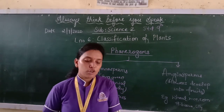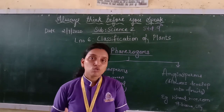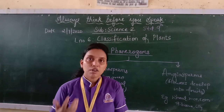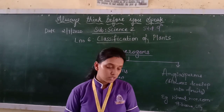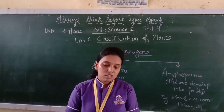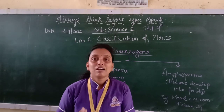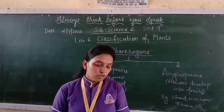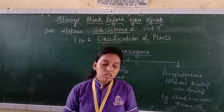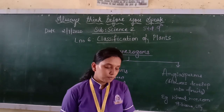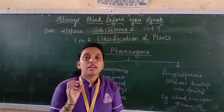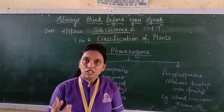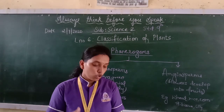Plants which have special structures for reproduction and produce seeds are called phanerogams. In these plants, after the process of reproduction, seeds are formed which contain the embryo and the stored food for the embryo. During germination of the seed, the stored food is used for the initial growth of the embryo.